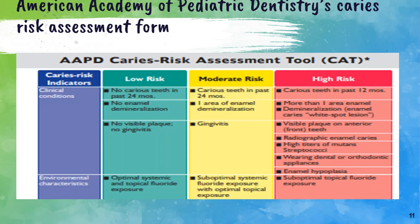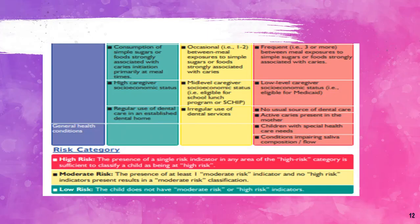Environmental factors include systemic and topical fluoride exposures, high caries rates of the individual, socio-economic status, presence of caries in siblings or caretaker, and frequency of sugar intake. Regular visits to the dental care provider determine lower risk factors. Regular dental visits and mid-level caregiver socio-economic status determine lower risk.